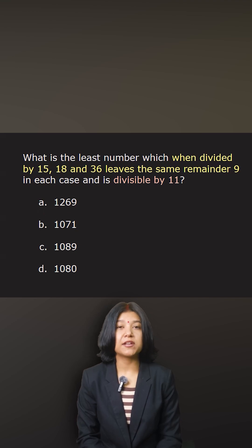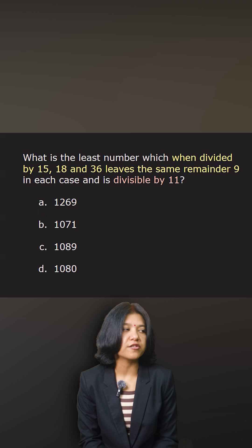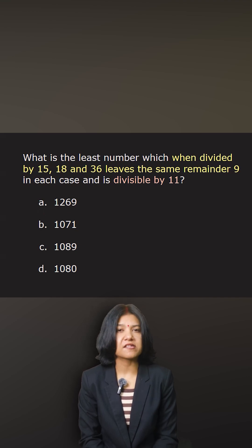You want to find the least number which when divided by 15, 18, and 36 leaves the same remainder of 9, and in each case is divisible by 11. Because you want the given numbers out of the options, you want the number to be divisible by 11, so we will check whether the given number is divisible by 11.